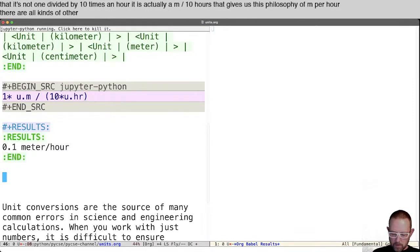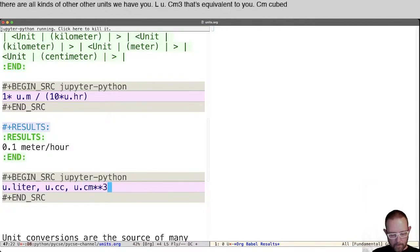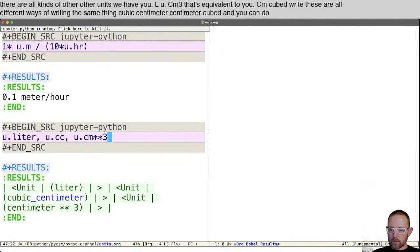There are all kinds of other units. We have u dot liter, u dot cubic centimeter. That's equivalent to u dot centimeter cubed. Right? These are all different ways of writing the same thing, cubic centimeter centimeter cubed. And you can do all the kinds of algebra with those that you want.